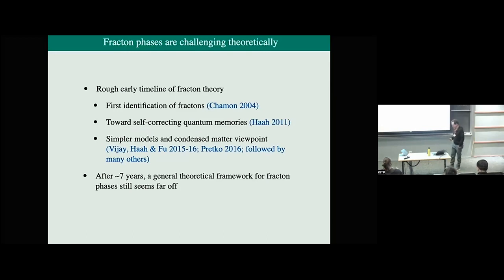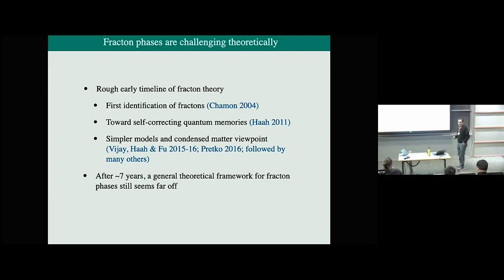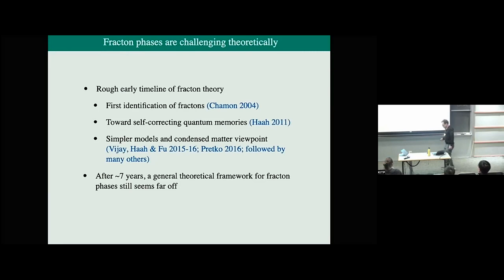If you think about the progress in topological phase theory over the last 15 years or so, there were some key early developments — in particular the discovery of topological insulators, and shortly afterwards the classification of free-fermion topological phases and the discovery of 1D SPT phases and their classification. After those early developments, there was a very rapid explosion of progress where we as a community asked and answered a lot of the basic questions about topological phases in a surprisingly systematic way.